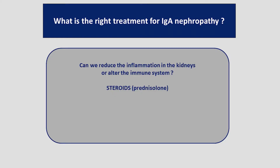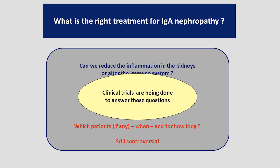Some kidney doctors like to use corticosteroids — drugs like prednisolone, methylprednisolone, or prednisone. There is a great deal of debate at the moment about how effective these drugs are in IgA nephropathy, and a lot of concern about the number of side effects they are associated with. There are studies ongoing at the moment that will hopefully answer the question as to whether these drugs are effective and safe to treat IgA nephropathy.